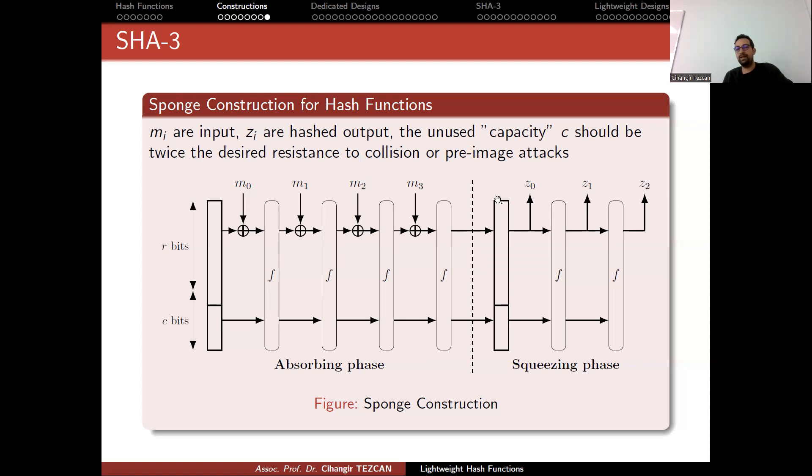So at the end, you provide the top r bits as your r bit output. Then you perform operations again, this F function. So you modify the internal state again, then produce r bits again, r bits again. So in this scenario, we produce 3r bit output, but input was 4r bits. So regardless of this input size, you generally provide fixed output.